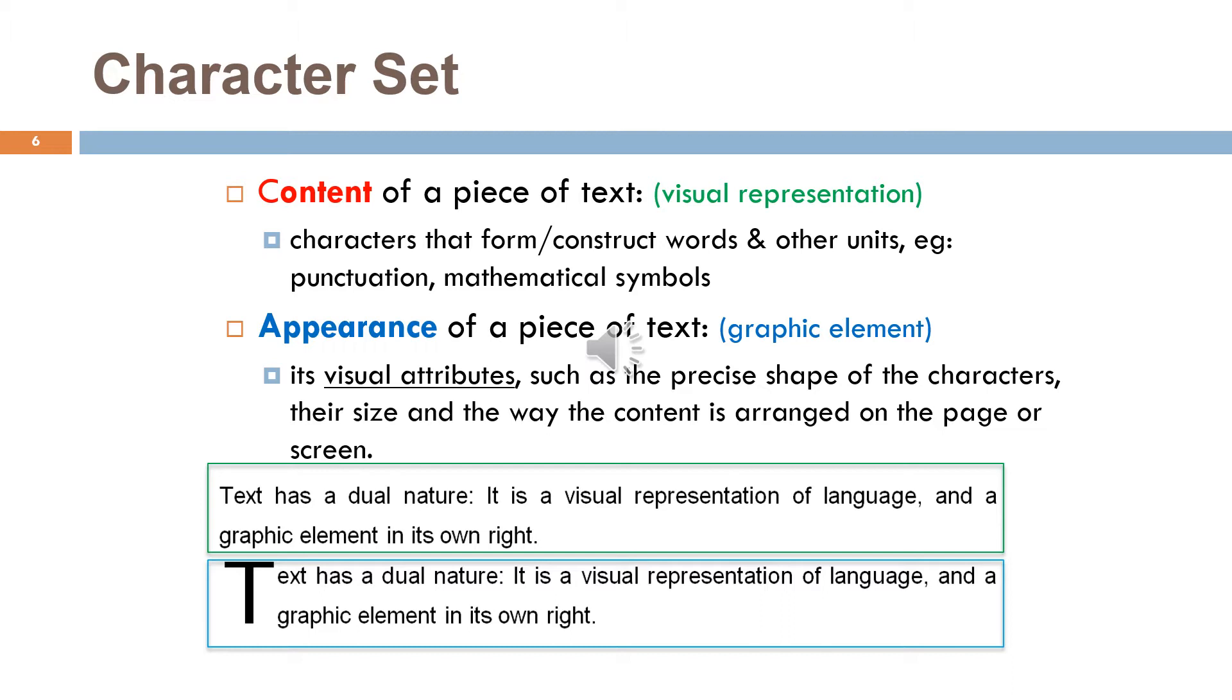Content of a piece of text consists of characters that form or construct words and other units, while appearance shows the visual attributes, such as shapes and how it's arranged to be displayed on the screen. As we can see in these two text boxes, the content of the text is identical, but not the appearance.